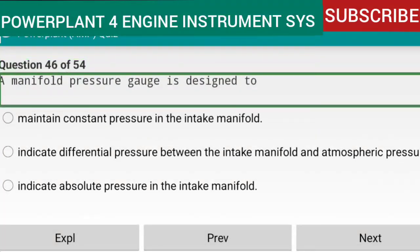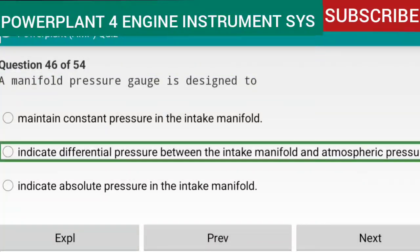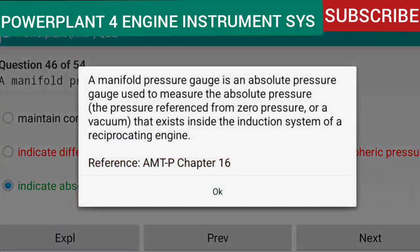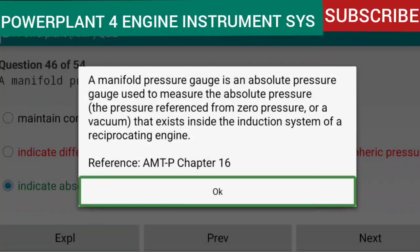Question 46 of 54: A manifold pressure gauge is designed to indicate absolute pressure in the intake manifold. A manifold pressure gauge is an absolute pressure gauge used to measure the absolute pressure — the pressure referenced from zero pressure or a vacuum — that exists inside the induction system of a reciprocating engine. Reference: AMTP Chapter 16.